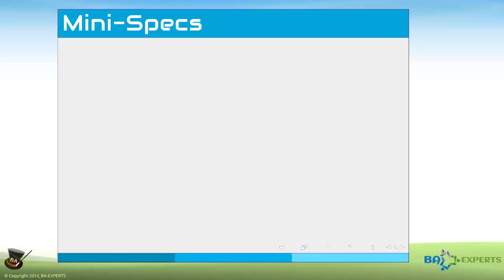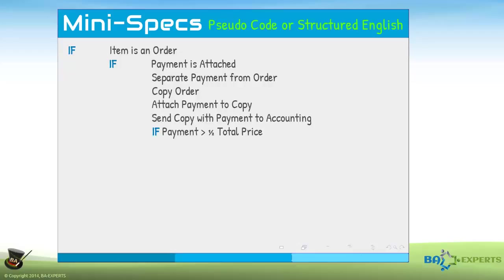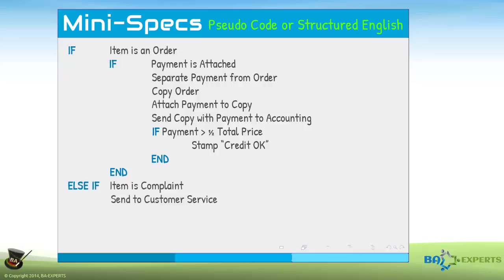If you and your target audience are comfortable with concepts such as pseudocode or structured English, you could also write the specifications like this: if item is an order, if payment is attached, separate payment from order, copy order, attach payment to copy, send copy with payment to accounting; if payment greater than one-half total price, stamp credit OK; end; end; else if item is complaint, send to customer service; else if item is payment, send to accounting; end.